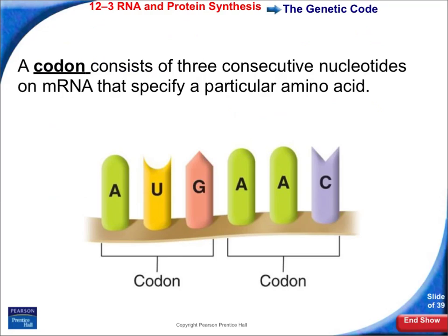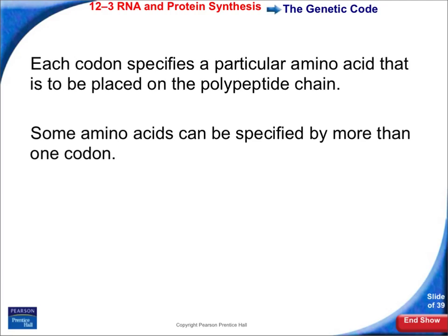When the genetic code is read, it's read in groups of three. Those groups of three we call a codon. Here's a codon — it's a sequence of three nucleotides together. This first sequence is A, U, G, and this is what we call a start codon. The next codon is A, A, C in our amino acid sequence. Each codon specifies a certain amino acid that is going to be put into the polypeptide chain, and sometimes amino acids can be specified by more than one codon.